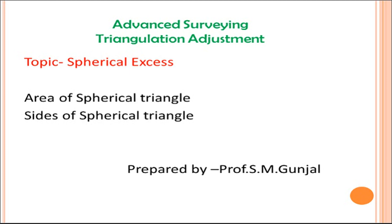As we know, in case of plane surveying we have to consider the surface as a plane. But in case of geodetic surveying, we have to consider the curvature of the earth. In plane triangles, the sum of all angles is 180 degrees. Similarly, in geodetic surveying we call it a geodetic triangle, also called a spherical triangle, where the sides are arcs of a sphere rather than straight lines.